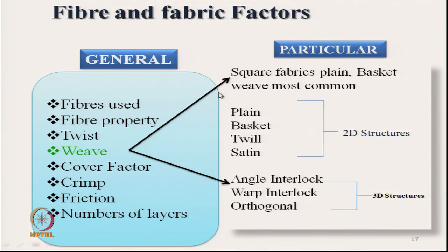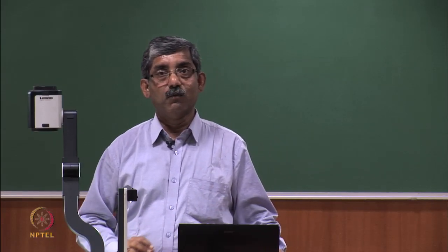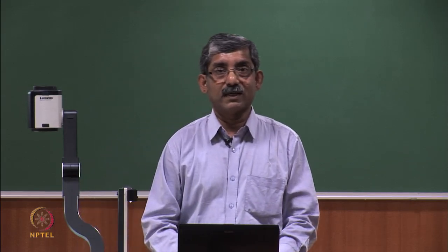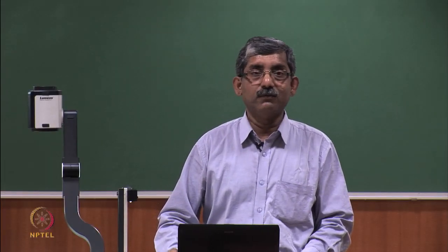Regarding weave structure: the fabric should be a square plain structure — plain and basket weave are most common — with square structure, and twill or satin are sometimes used. All these are two-dimensional structures. In addition, 3D structures like angle interlock, warp interlock, and orthogonal are sometimes used to enhance the impact performance of the clothing.